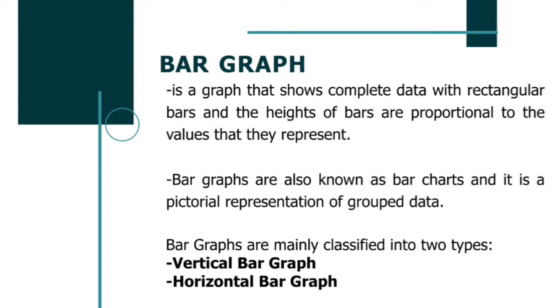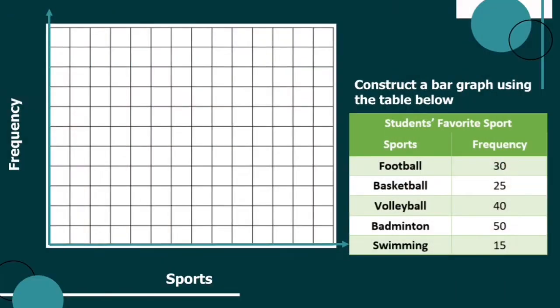Now that we know the definition, let's take a look at the examples on how to plot a vertical bar graph. Construct a bar graph using the table 'Students' Favorite Sport.' When plotting a vertical bar graph, we must indicate the frequency on the left side, or Y axis, and the categories on the X axis.